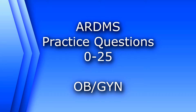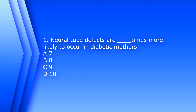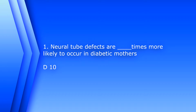Question 1. Neural tube defects are blank times more likely to occur in diabetic mothers. A. 7 times. B. 8 times. C. 9 times. D. 10 times. The answer is D. 10 times.